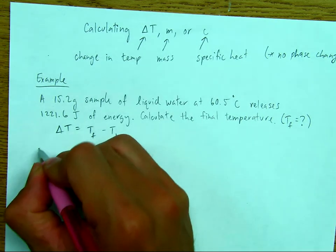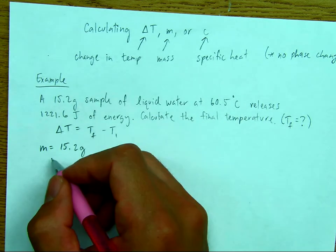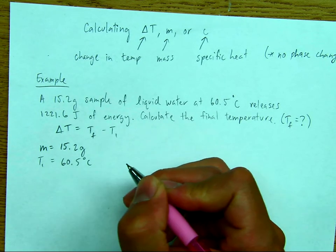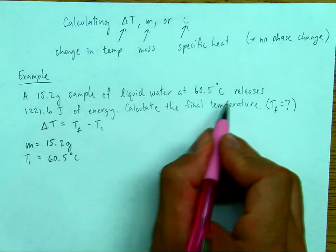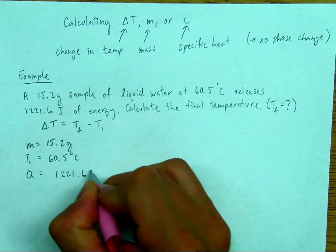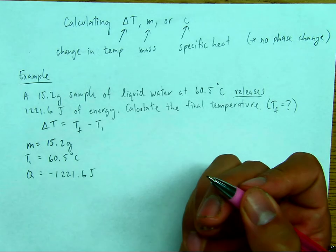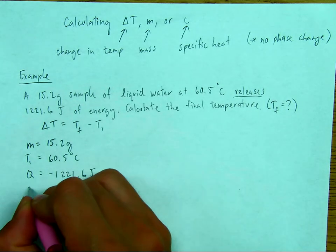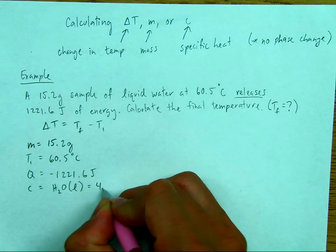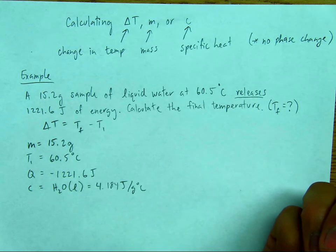So let's write down all of the notes. The mass is 15.2 grams. The initial temperature is 60.5 degrees Celsius. Q is 1,221.6 joules. And the key word here is release. Whenever it says release, I know that it's going to be exothermic. So this has to be negative. I know that C, if this is liquid H2O, is going to be 4.184 joules per gram degrees Celsius.